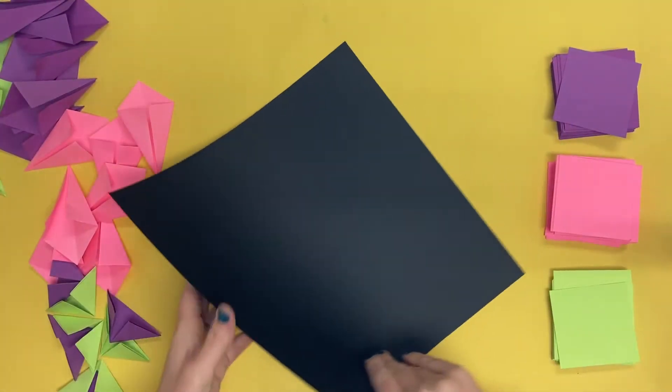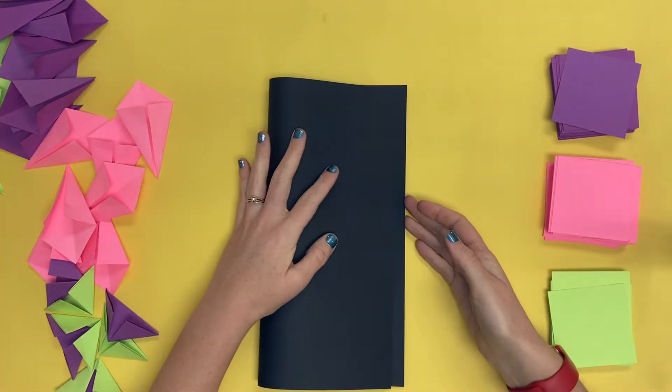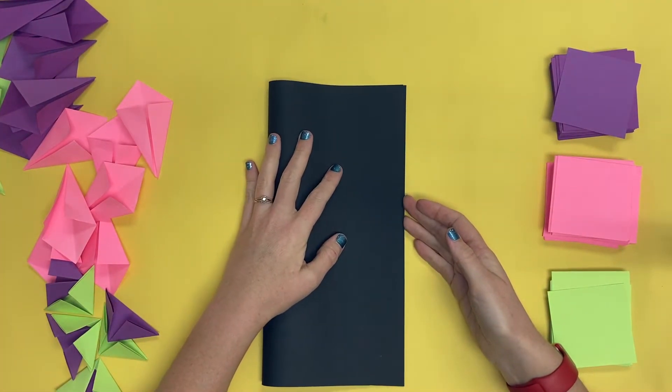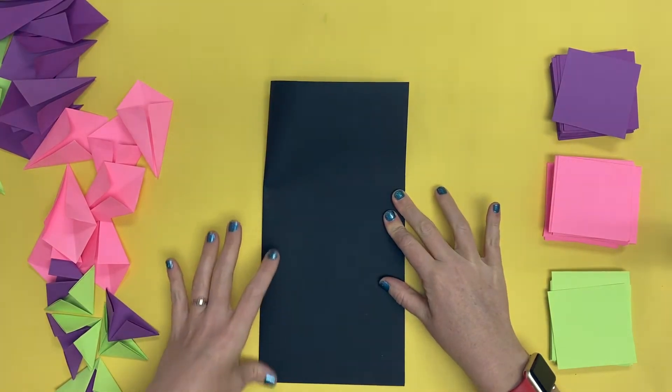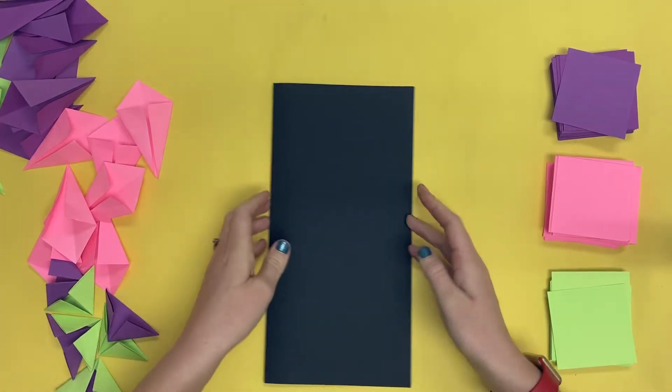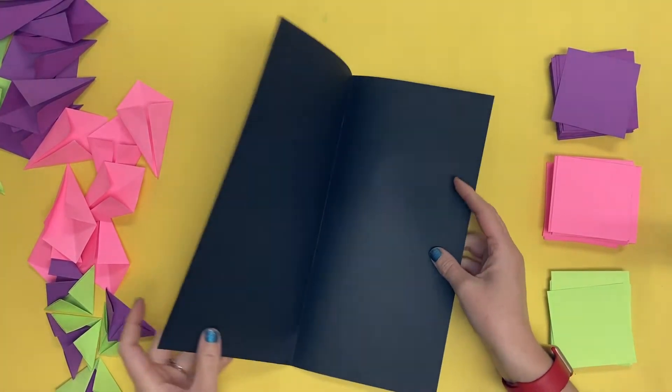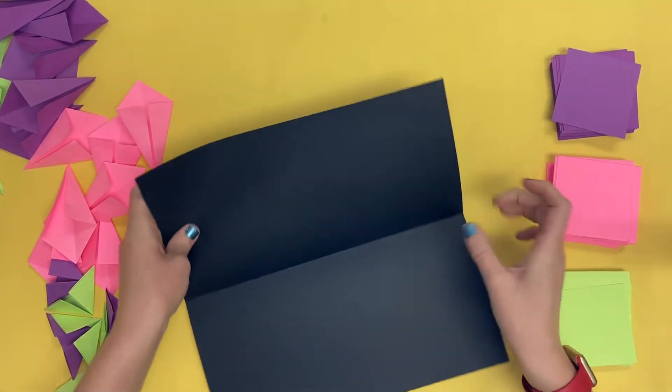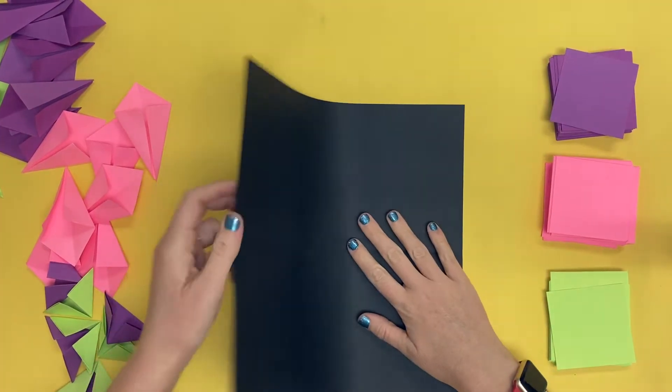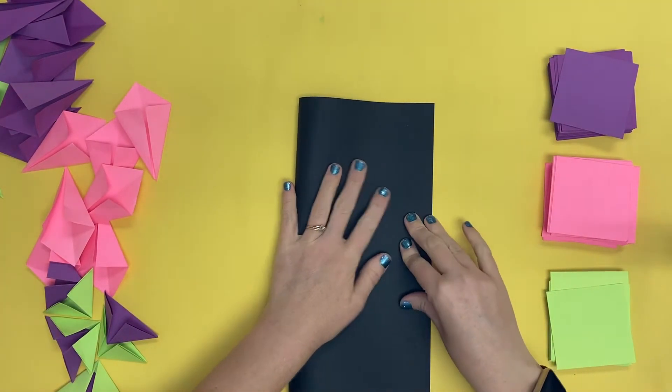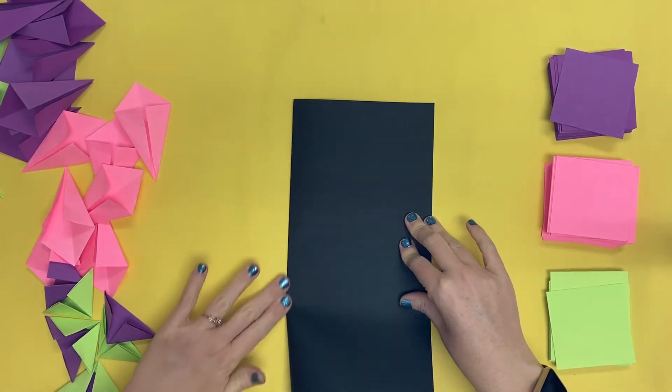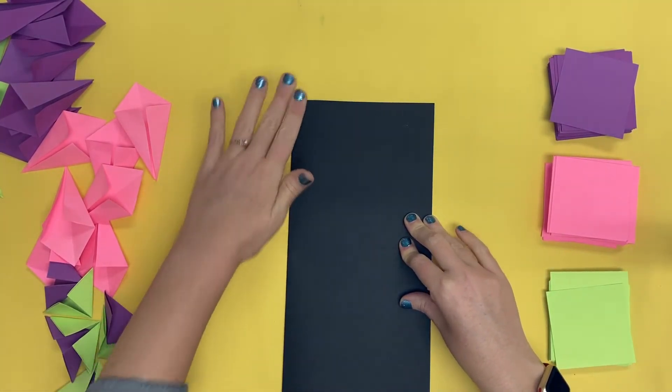I'm going to start today's art activity by folding my black paper into eighths. I'm going to fold it so I have eight equal sections. I'm going to fold it horizontally and then rotate it and fold it going vertically. Make sure those corners are touching when you crease the paper.